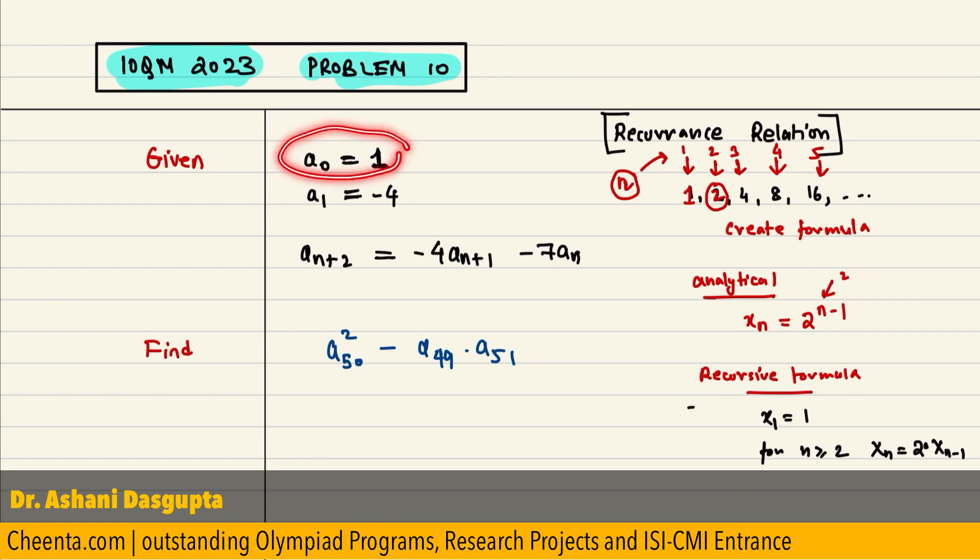The first term, sometimes it starts with the 0th term. The 0th term of the sequence is given to be 1 and the first term, the term number 1 is negative 4 and it is given that second term onward or a2 onward, which is basically the third term of the sequence because you are starting with 0th term.